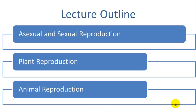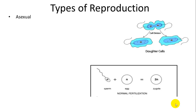We'll talk about asexual and sexual reproduction, and then talk about plant and animal reproduction. Asexual reproduction requires only one individual to reproduce, where they make an exact copy of themselves, essentially a clone.